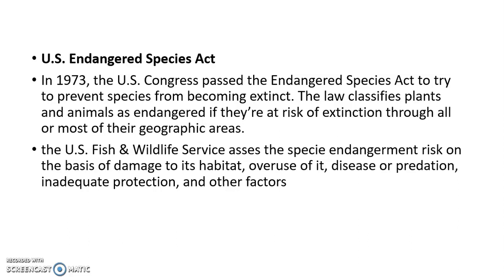The U.S. Fish and Wildlife Services assess species endangerment risk on the basis of damage to their habitat, overuse, disease or predation, inadequate protection, and other factors. On the basis of these factors, the U.S. Fish and Wildlife Services assess the status of the species — for example, if there is a loss of habitat, if people are overhunting a species, or if there is a disease prevalent in that species, it means the species will become endangered in the near future.